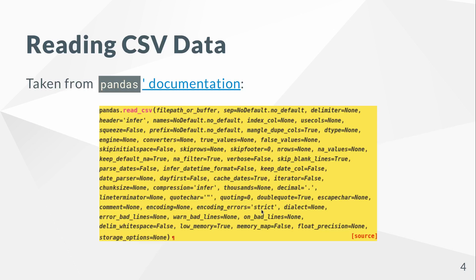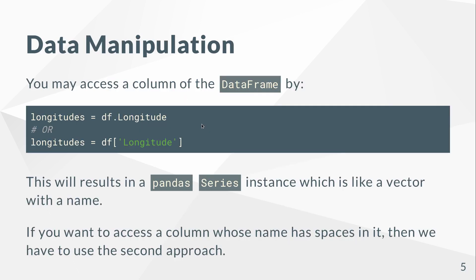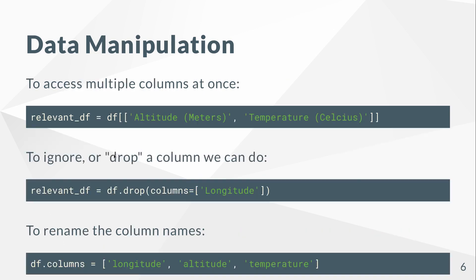DataFrame, or 'def', stands for data frame, and it's a data structure that looks like this. read_csv offers many more capabilities and you can take a look at the available arguments in the documentation. For data manipulation, to access a column you can use attribute access with a dot or key access with brackets and a string. This results in a pandas Series, which is just a vector with a name.